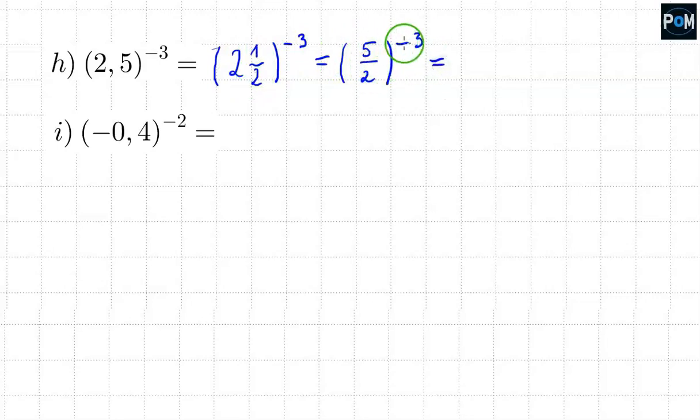To the power of minus 3. Now, since this is a fraction, this minus flips the fraction upside down for us, making it a fraction of 2 fifths. And now, we raise it to the third power, to a positive power, and 2 fifths times 2 fifths times 2 fifths is like this. From the multiplication of 2s, we get 8. And from multiplication of 5s, we get 125. This is the result for example h.